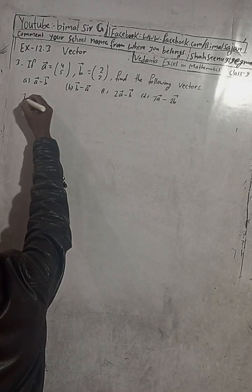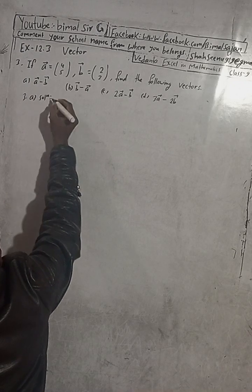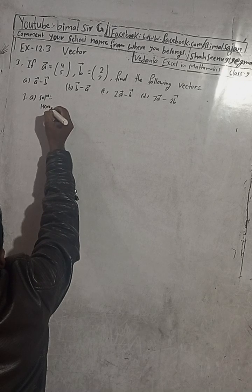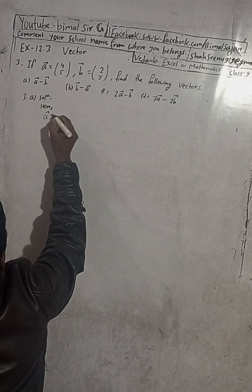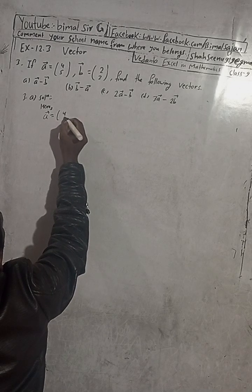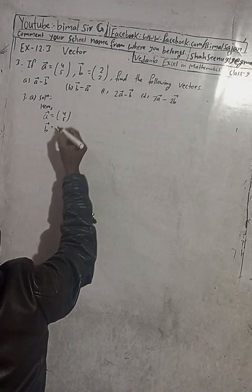Solution 3A. You have to find A vector, B vector. So write here, A vector is equal to given (4,5) and B vector is given (2,3).